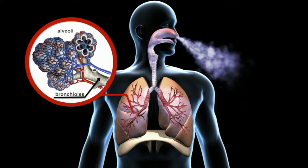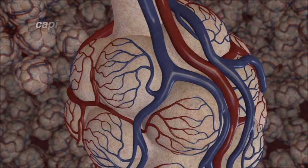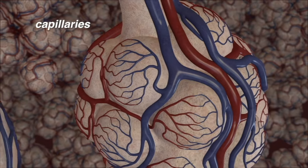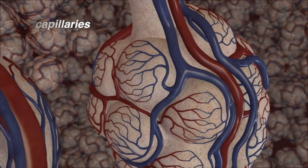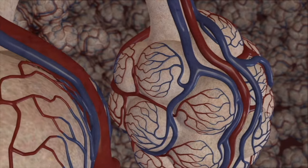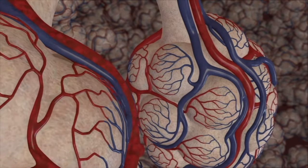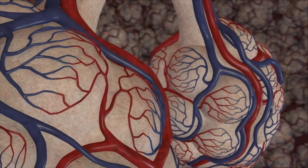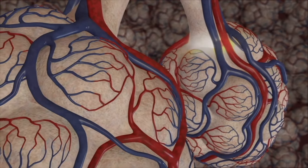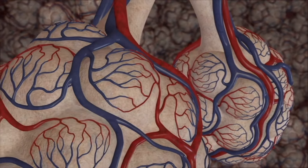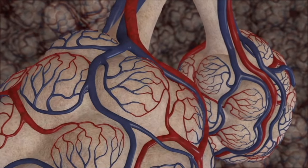Your lungs have over 300 million alveoli. A web of tiny blood vessels called capillaries envelops each alveolus — this is where gas exchange occurs. Oxygen from the inhaled air passes through the thin adjacent walls of the alveoli and capillaries, diffusing into deoxygenated blood from the heart. At the same time, carbon dioxide from the blood diffuses into the alveolus, from where it is exhaled.